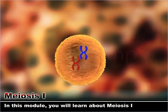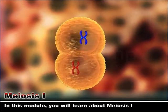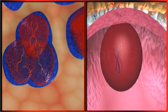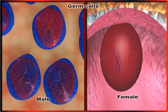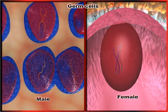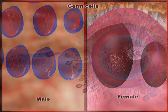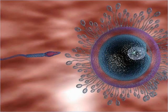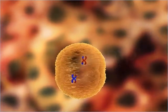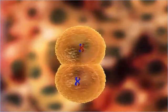In this module you will learn about meiosis one. Meiosis is a nuclear division that occurs in the germ cells of sexually reproducing organisms during the production of reproductive cells called gametes. Meiosis is a reductional division that reduces the chromosome number of a cell by half.